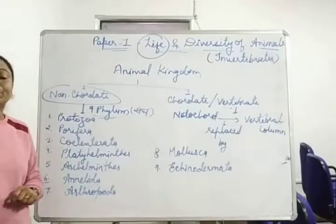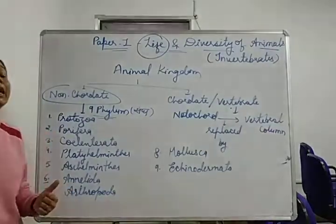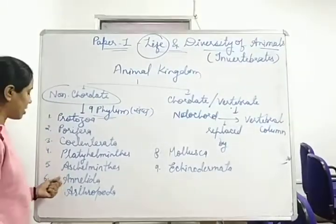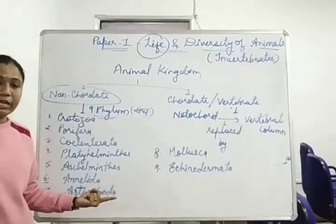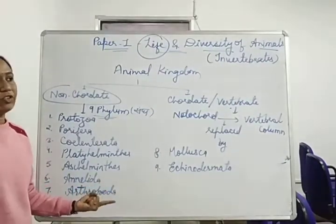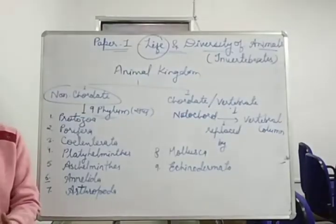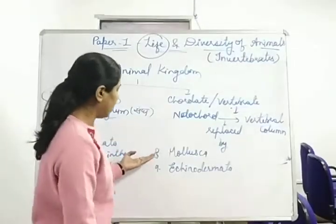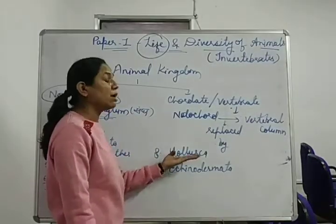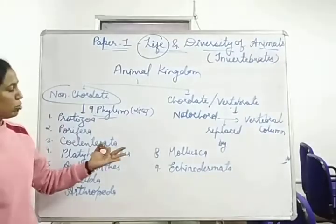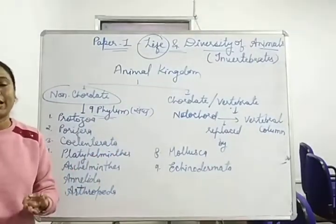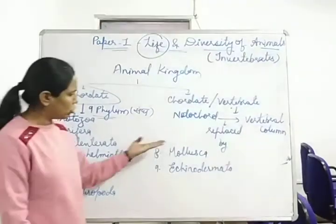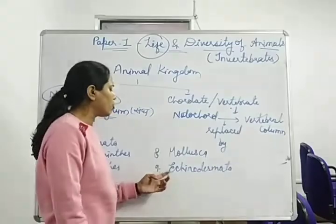Then in Annelida come earthworms, Nereis, Heteronereis, leeches. Then Arthropoda, which includes insects, Crustacea, spiders. Then Mollusca — soft-bodied animals — including Pila, Unio, and Octopus.